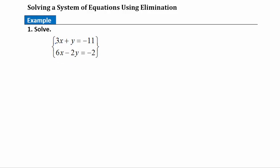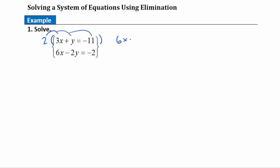I can choose either the x variables or the y variables to eliminate — in certain cases it's easier to eliminate one over the other. In this case it's easiest to eliminate the y variables. This is a positive y and this is a negative 2y, so I can take this positive y and turn it into a 2y by multiplying this whole equation by 2. That gives us 6x plus 2y equals negative 22.